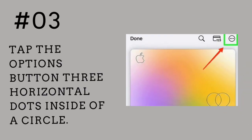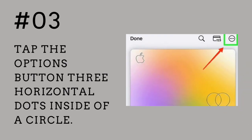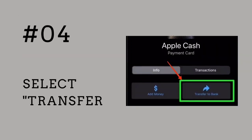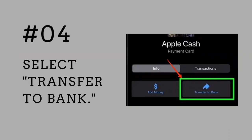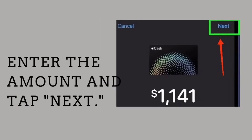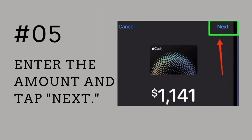Tap the Options button — three horizontal dots inside of a circle. Select Transfer to Bank. Enter the amount and tap Next.